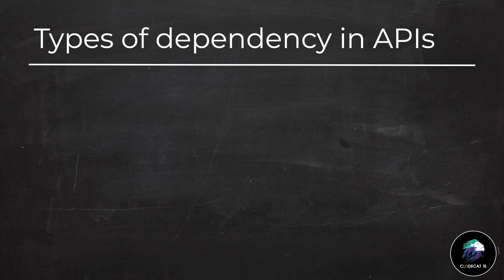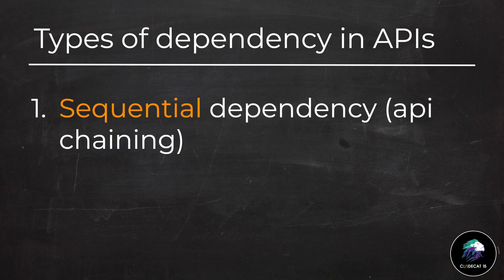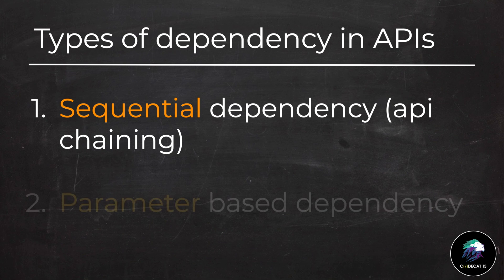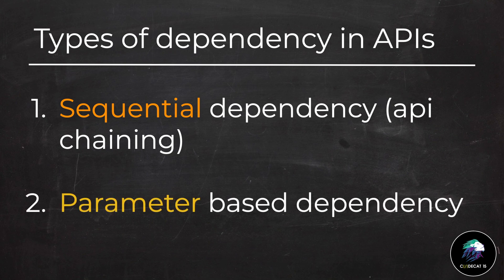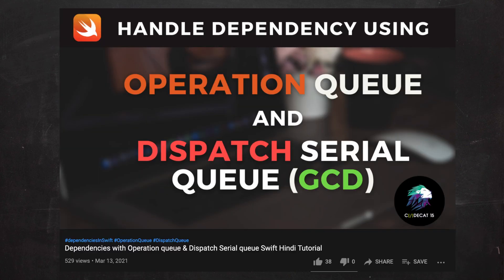One is sequential dependency, some may call it API chaining, and the other is parameter-based dependency. We will explore dependencies in detail by working on a real project-based example. If you want to know how to resolve dependency, then you can see this video.